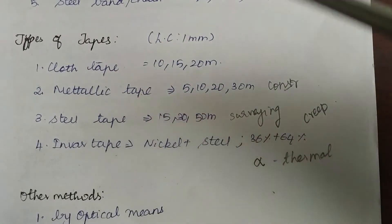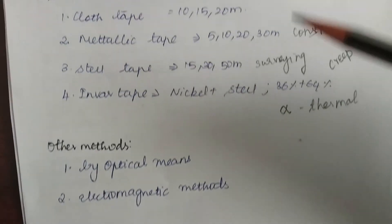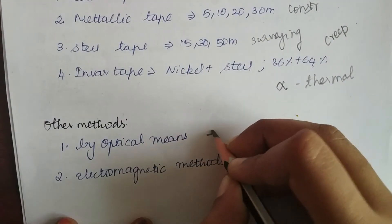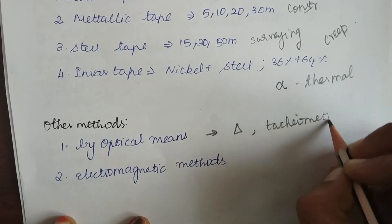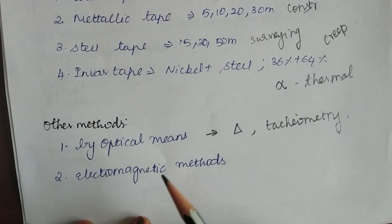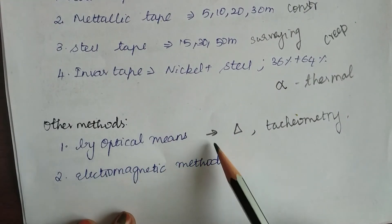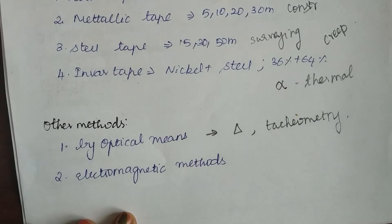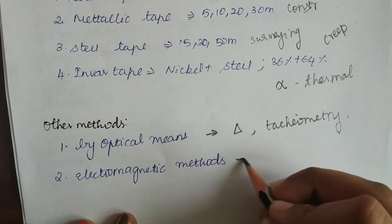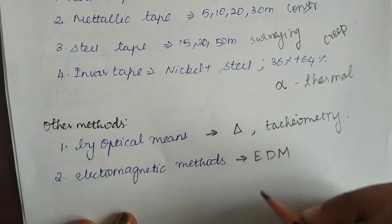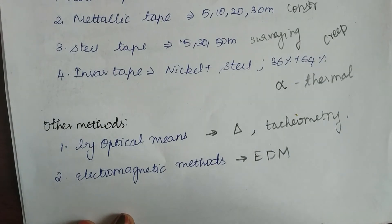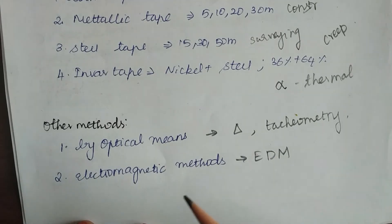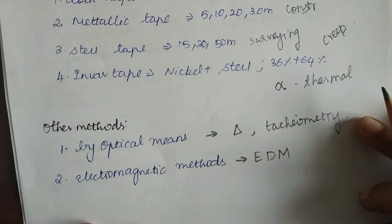Other types of linear measurement available, other than chaining, are by optical means — such as triangulation or tachymetry — which we will look into in upcoming chapters. The next method is electromagnetic methods, which mainly refers to EDM (Electronic Distance Measurement). EDM uses the principle of propagation, reflection, and reception of radio waves, light waves, or infrared waves to find the distance between two objects.